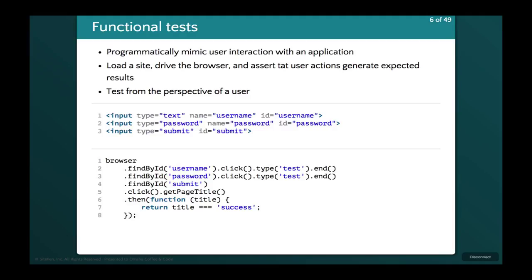Functional tests are where we actually mimic the user using our application — testing from the perspective of the user. We load the site, pretend we're the user, drive the browser to do different actions, click buttons, type into text fields, and see if our actions generate expected output. Here's an example: a login page where we find the username, click on it, type in a test username, enter the password, find the submit button and click it, then assert that we went to a new page with 'success' as its title, meaning we successfully logged in.